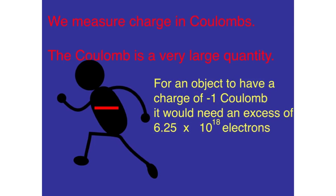If we wanted to give an object a charge of negative one coulomb by adding electrons, we would need to add a lot of them: 6.25 times 10 to the 18th electrons.